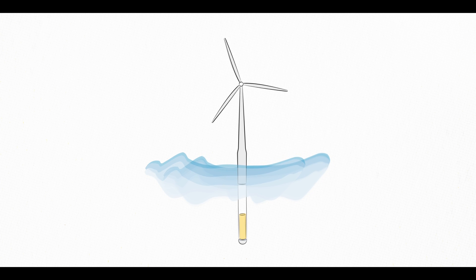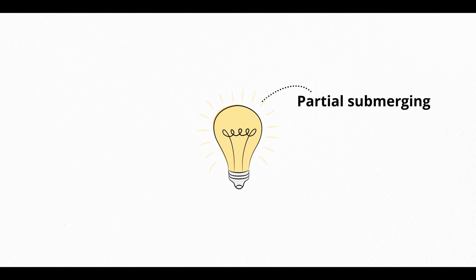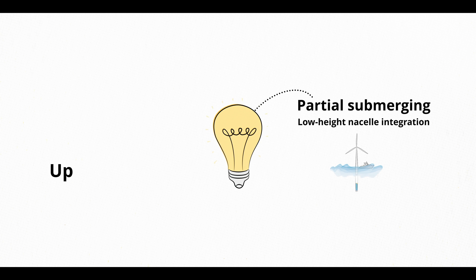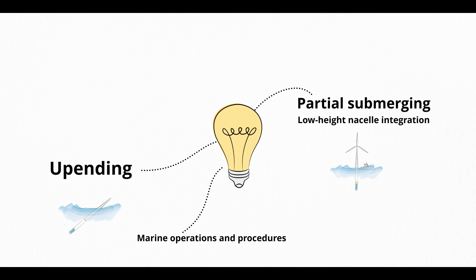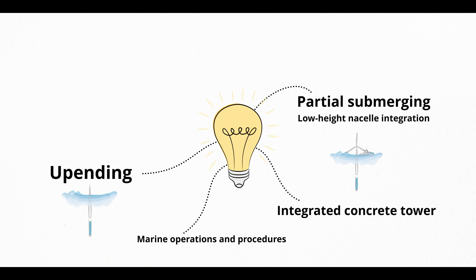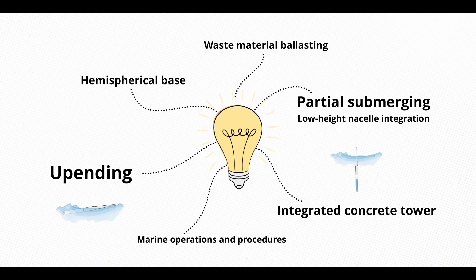Besides horizontal construction and easy transportation, the Windcrete design involves other innovations such as partial submerging, low height nacelle integration, upending, marine operations and procedures, integrated concrete tower, hemispherical base, and waste material ballasting.